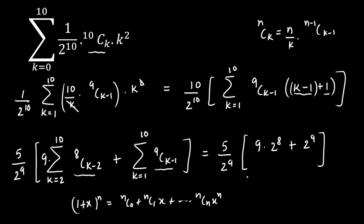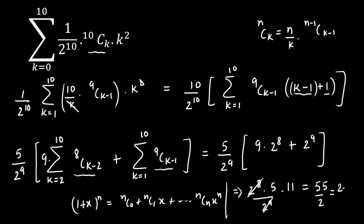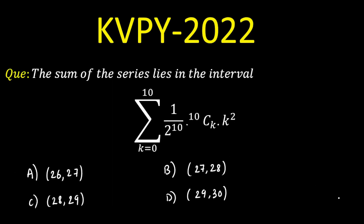Now doing the calculation: taking 2^8 outside, we get 2^8 × (5/2^9) × (9 + 2) = 2^8 × (5/2^9) × 11. The 2^8 and 2^9 cancel, giving 55/2 = 27.5 as the sum of the series. Checking the options, option B is correct since 27.5 lies in that interval.